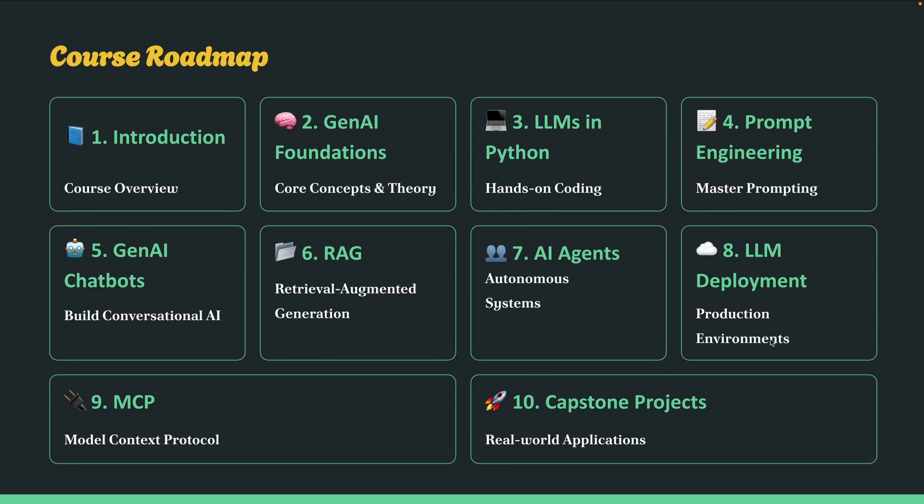Then, chatbots — the fifth section. You will build and deploy generative AI chatbots with LangChain and LlamaIndex, create a Streamlit UI, and even deploy it on Streamlit Cloud. The sixth section is about RAG, where you will make LLMs smarter with retrieval-augmented generation and build a PDF question-answering bot.